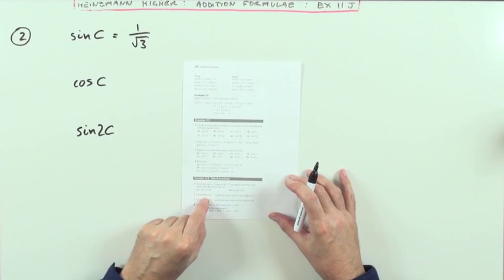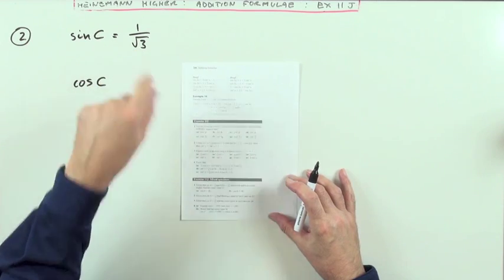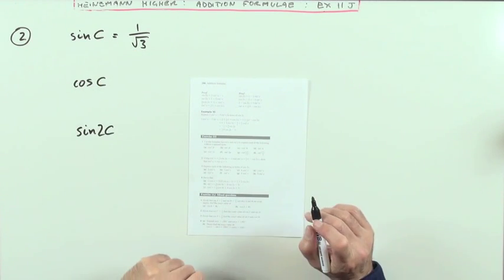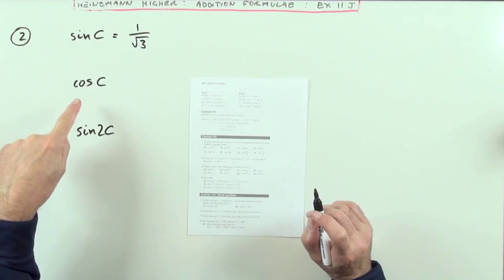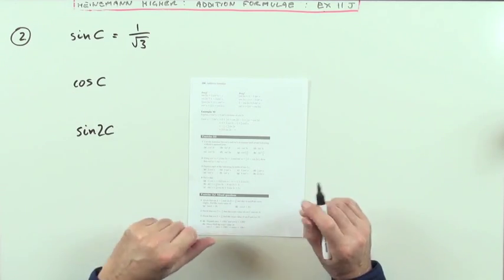So for number two here, given the exact value of the sine of C in this form here, find the exact value of the cosine of C and the sine of 2C.